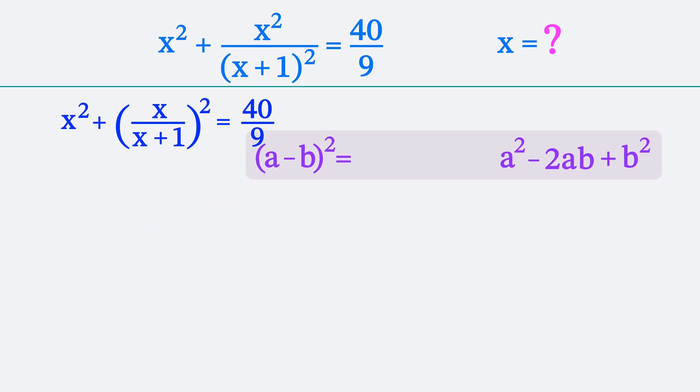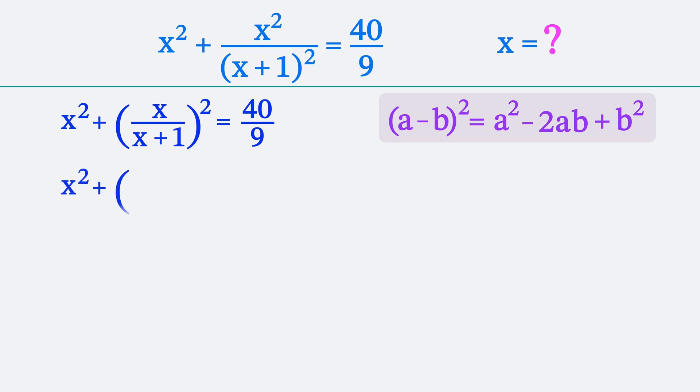Thus, to complete the square of a difference, we need to subtract twice the product of x and x divided by x plus 1. Let's subtract twice the product of x and x divided by x plus 1 from the left side and add it back to keep the equation.